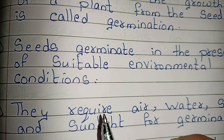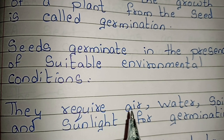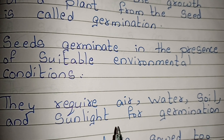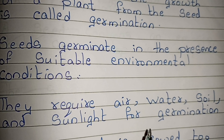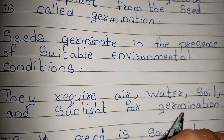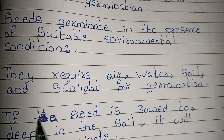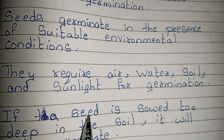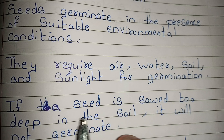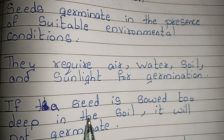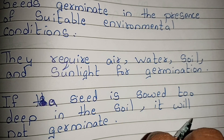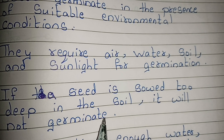They require air, water, soil and sunlight for germination. If a seed is sowed too deep in the soil, it will not germinate.